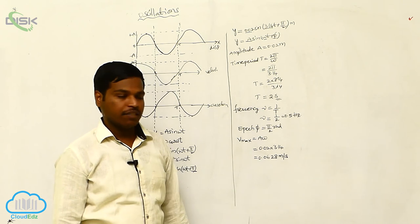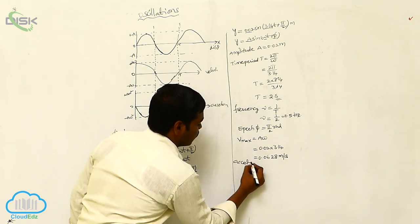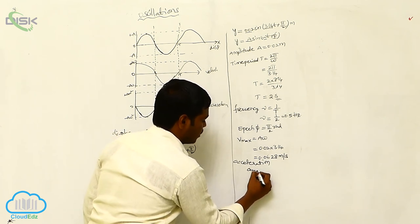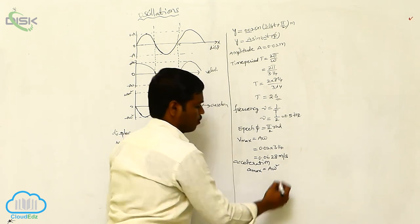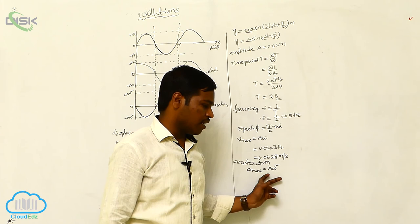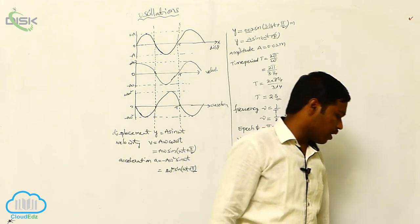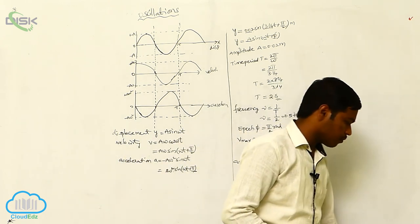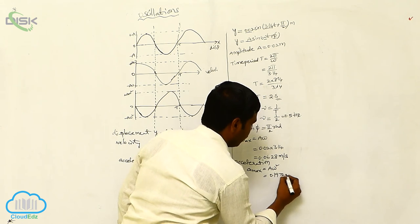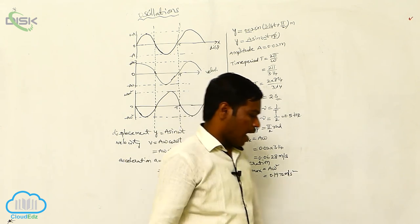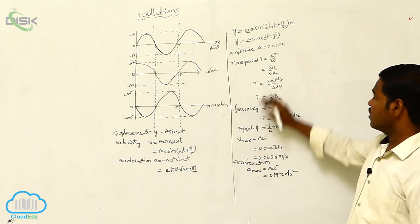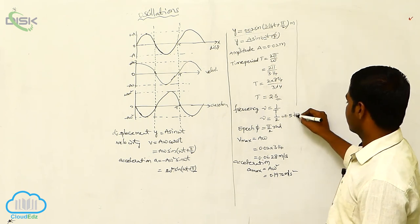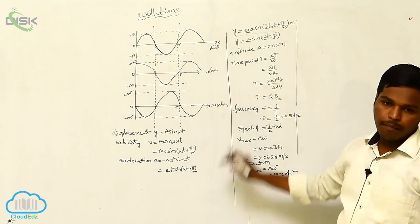The maximum acceleration is a·omega squared. If we calculate this a·omega squared value, we get 0.1972 meter per second squared. These are the values we can calculate from the given equation of displacement of a particle in simple harmonic motion. Thank you.